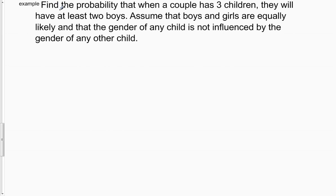So this example reads, find the probability that when a couple has three children, they will have at least two boys. Assume that boys and girls are equally likely. That's an important criteria for the classical method. Boys and girls are equally likely,